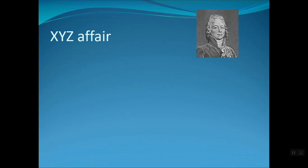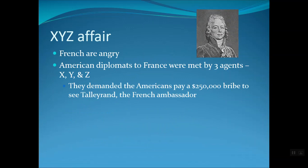One of the big things that Adams dealt with during his administration were the French. The French were angry over our lack of support in the French Revolution and they were attacking and seizing our ships. American diplomats went to France to negotiate, but they were met by three agents — X, Y, and Z — who demanded the Americans pay a bribe of $250,000 to see Talleyrand and the French ambassador. Bribes were not unusual during this time, but a bribe that large was very much an insult and a slap in the face.